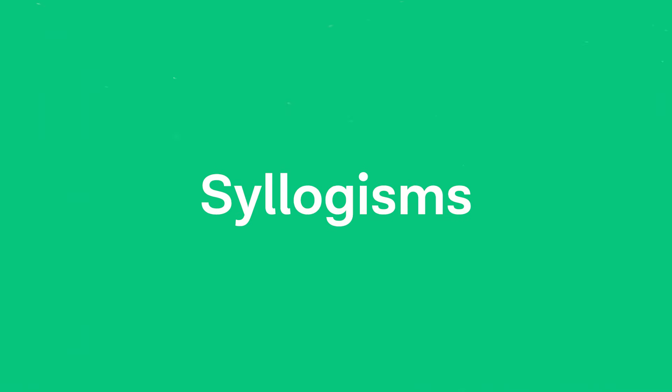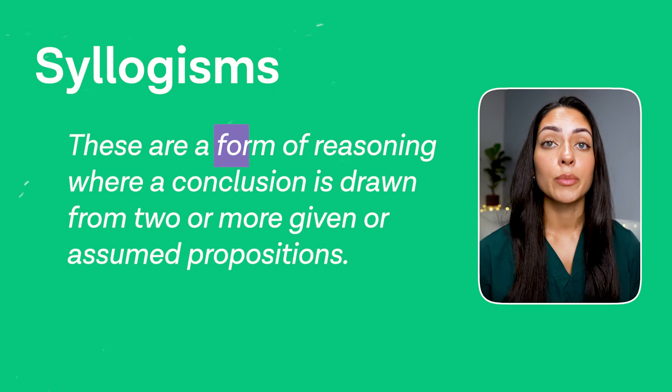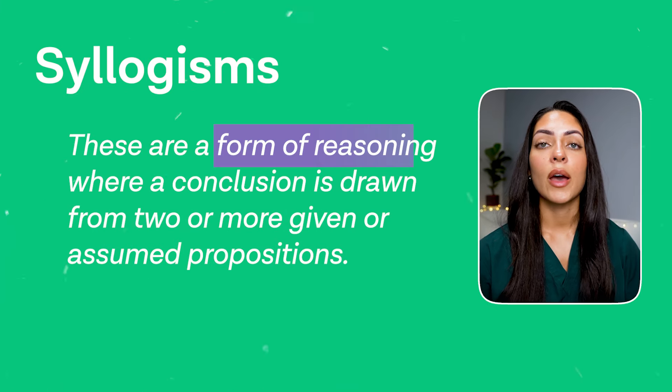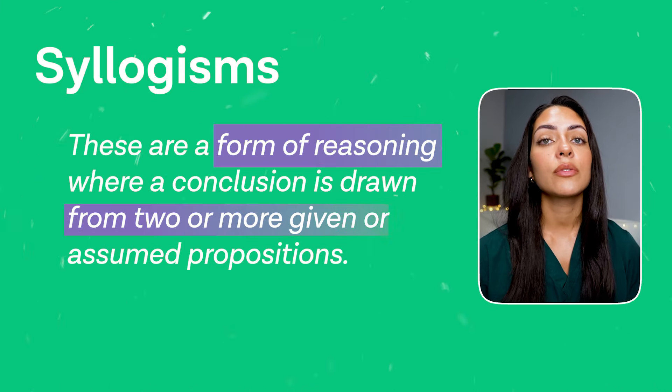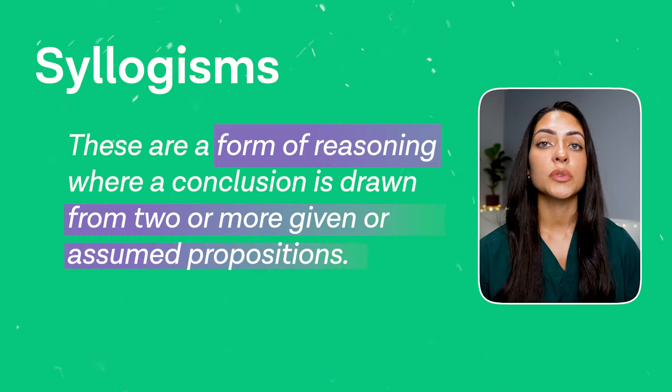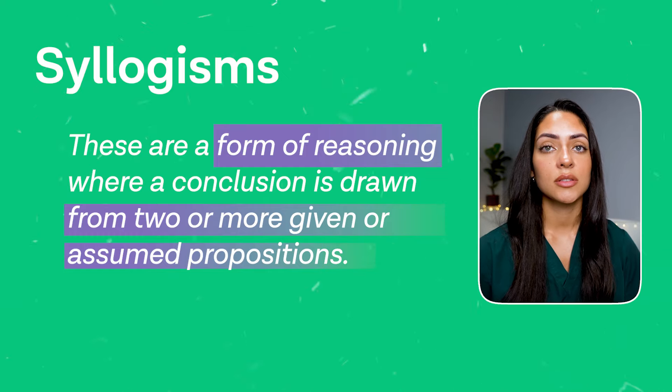First up, let's look at syllogisms. These are a form of reasoning where a conclusion is drawn from two or more given or assumed propositions. You will need to decide whether each conclusion does or does not follow given the information you are provided, and then drag and drop your answer accordingly.